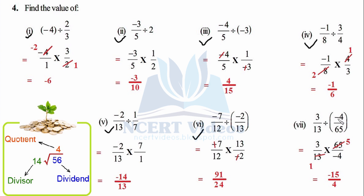Last part (seventh): flip the divisor to get 65/(−4). So 1 × 13 = 13, 5 × 13 = 65 in the numerator; 5 × 3 = 15, and denominator −4 × 1 = −4. Since there is only one negative sign in the whole rational number, we can move it to the numerator. That completes Question 4.